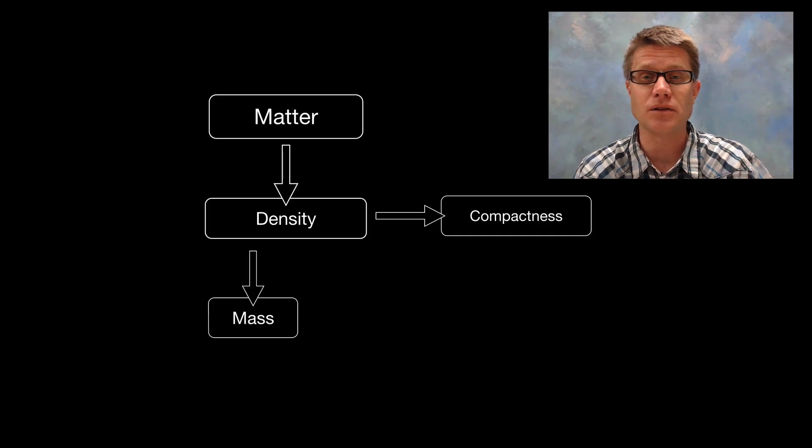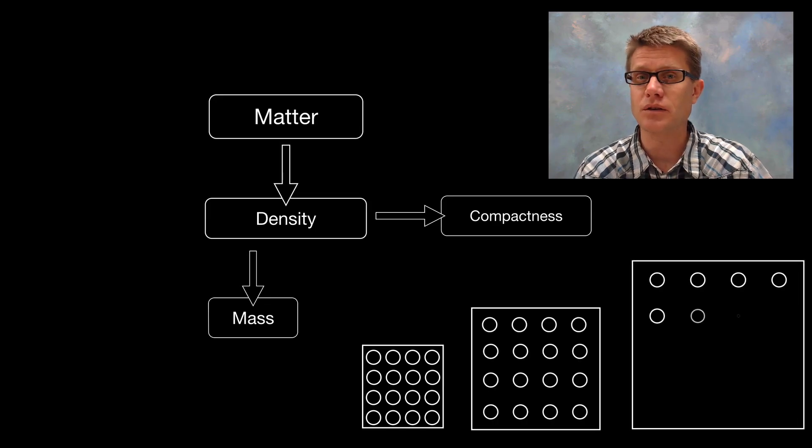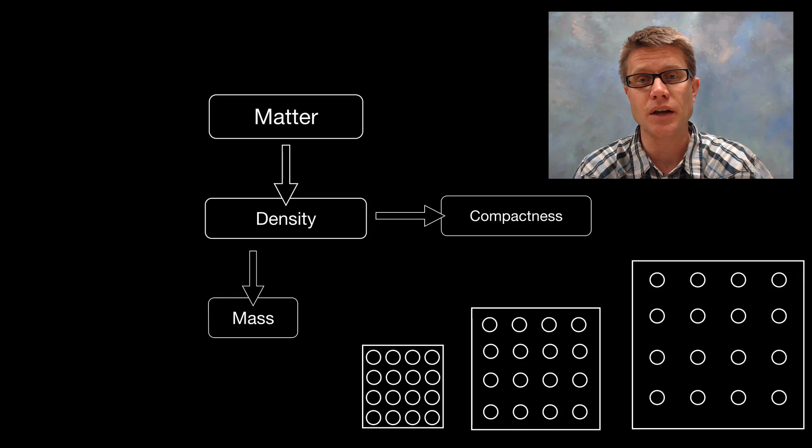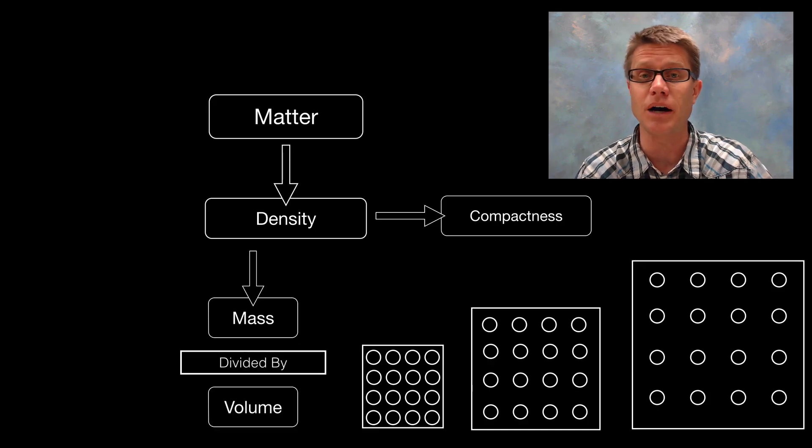Density is affected by mass. Let me show you a couple of different objects. We've got object 1, object 2, and object 3. Those circles inside the squares represent the atoms inside that matter. If I were to ask you which of these three have the greatest mass, your tendency is to say this one has the greatest mass. But they all have the same amount of atoms, so they're all going to have the same mass. Just mass alone doesn't tell us anything about compactness.